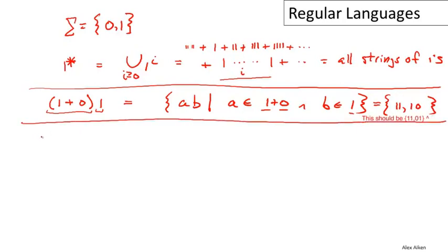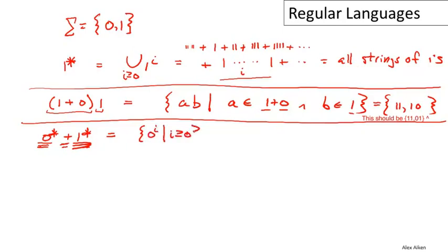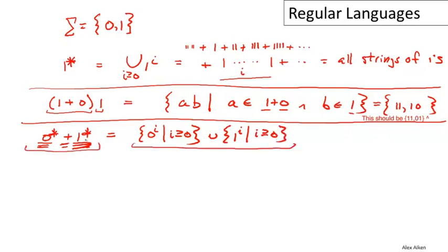Let's do another example, slightly more complex. Let's look at zero-star plus one-star and think about what that equals. We already know one-star equals all strings of ones, and by analogy zero-star is all strings of zeros. Then we take the union of those two things. So this is the set of strings — zero to the I for I greater than or equal to zero — union with one to the I for I greater than or equal to zero: all strings of zeros union all strings of ones.